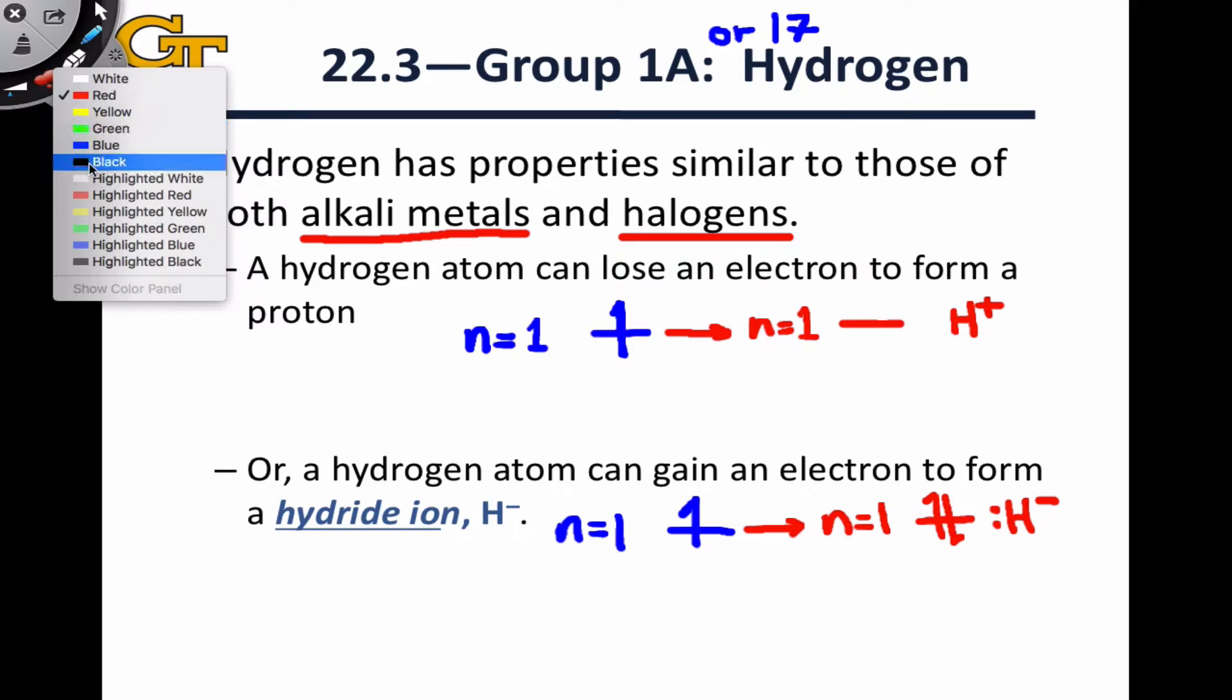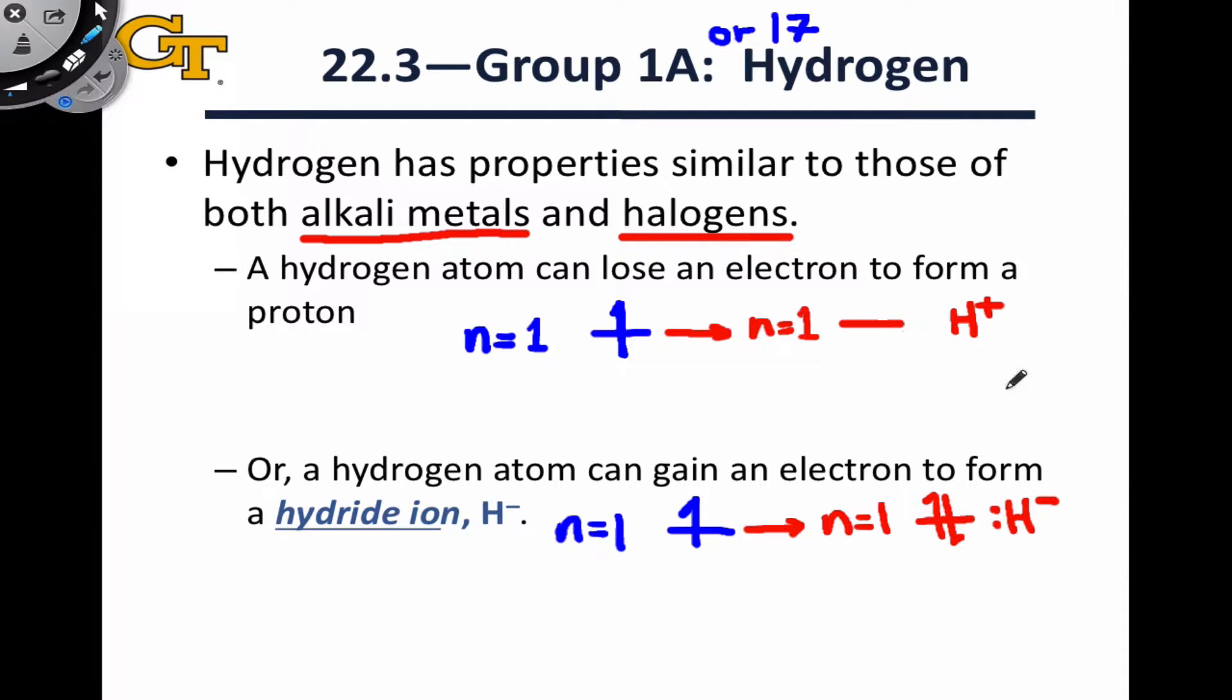We've seen plenty of cases where H-plus is relevant in the context of Bronsted acids, but I want to impart that thinking of hydrogen in this form as what's called hydride is going to be important as well, especially as we start talking about bonds between metals and hydrogen.